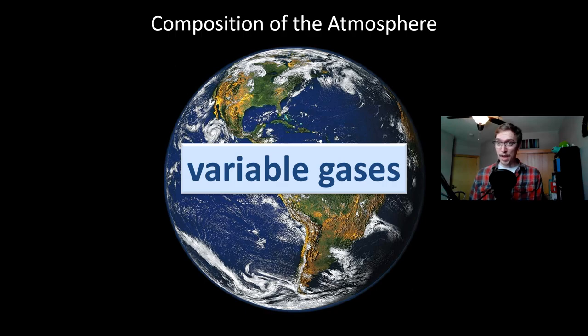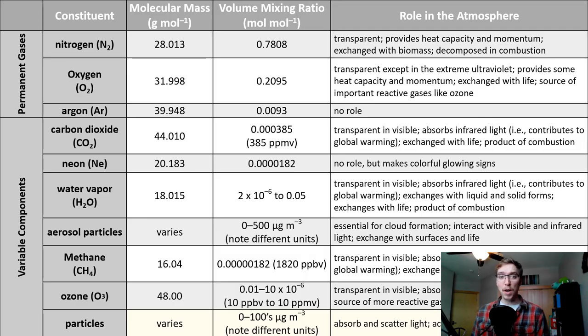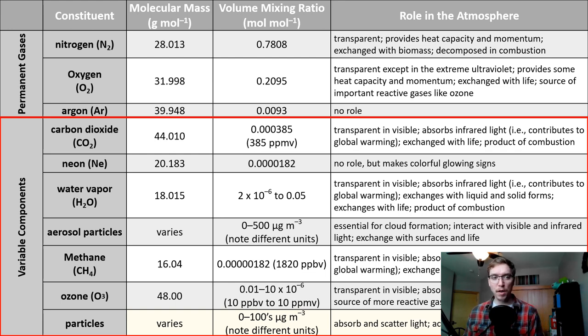Moving into the variable gases next. You can see the rest of our table here. Variable gases make up this component, this bottom square. Carbon dioxide, neon, water vapor, aerosol particles, methane, ozone, and particles in general. Just the rest of the bulk grouping here.